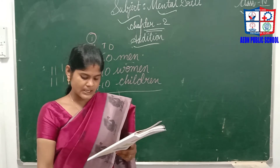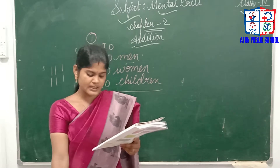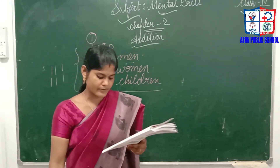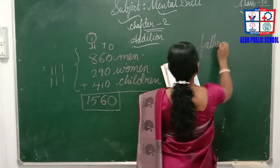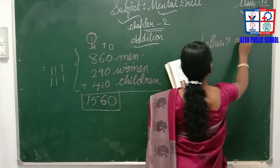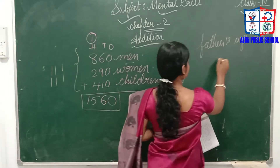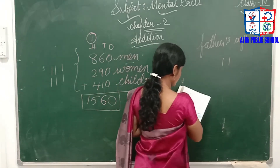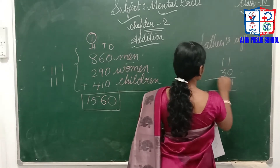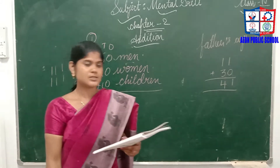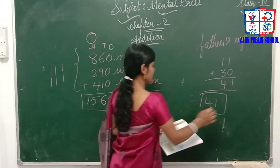Second: Nita's father is 30 years older than her. If Nita's age is 11 years, what is her father's age? Father's age is 30 years more than Nita, so we add 30 plus 11. That is 41, so her father's age is 41.